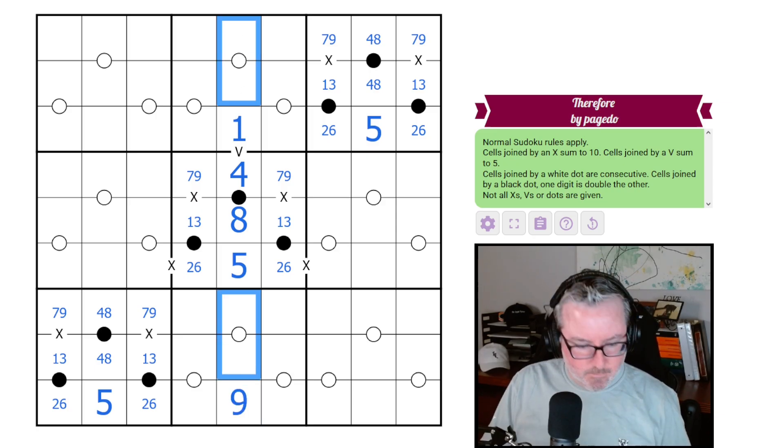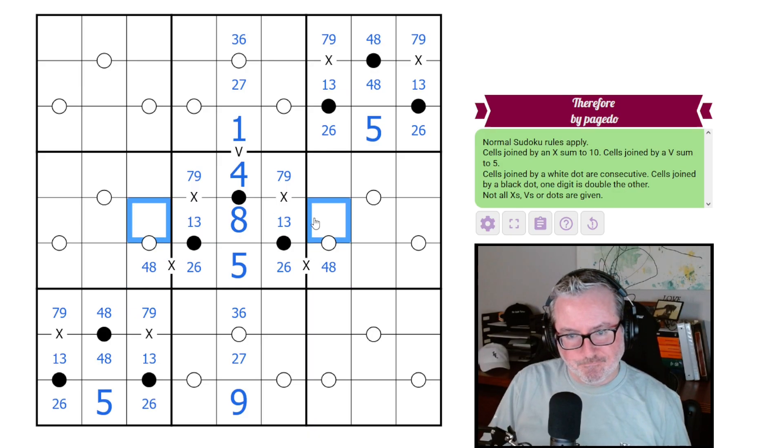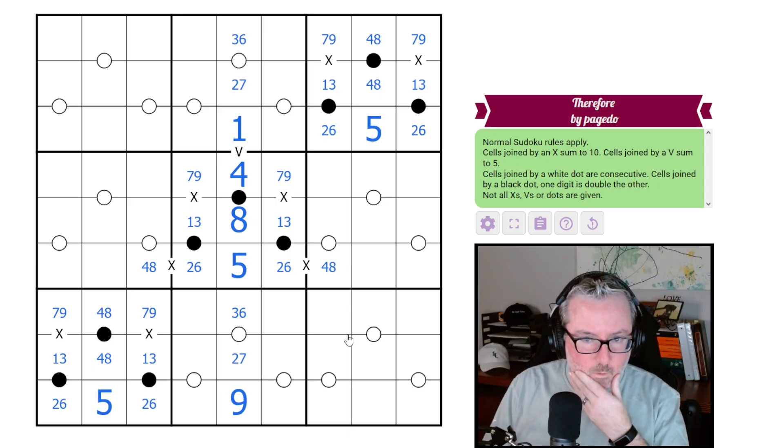Where does the nine go in this column? Because of this eight, it can't go in either of those two, so it goes here. And then these will be from two, three, and six, seven. Now you can't be seven, so you can't be six, you can't be three, you can't be two. Same thing is going to apply here. Let's get those in. The twos and sixes say these are fours and eights.